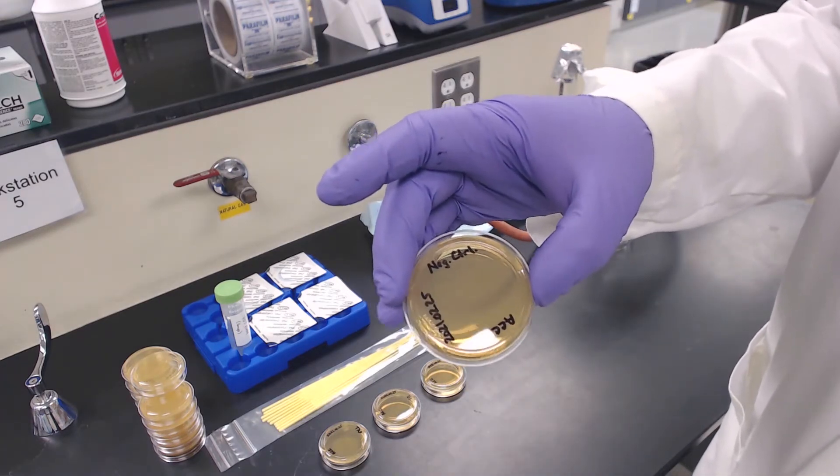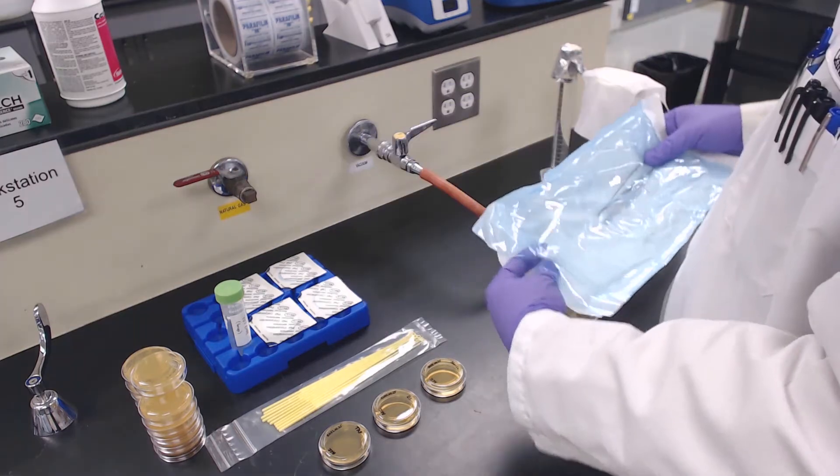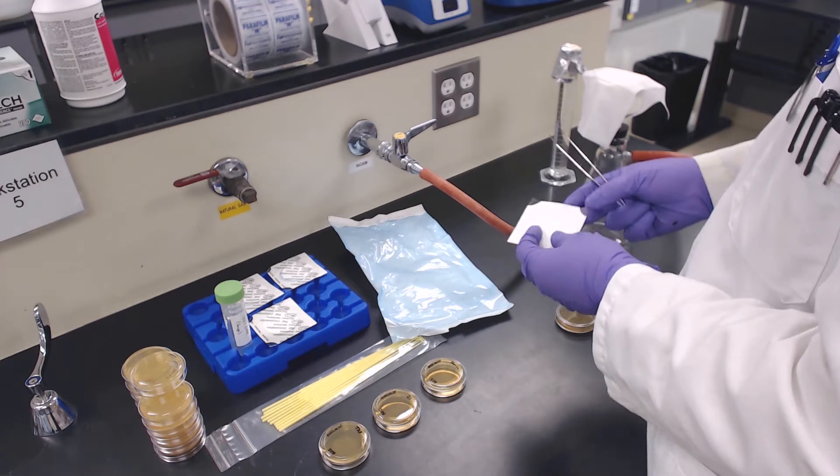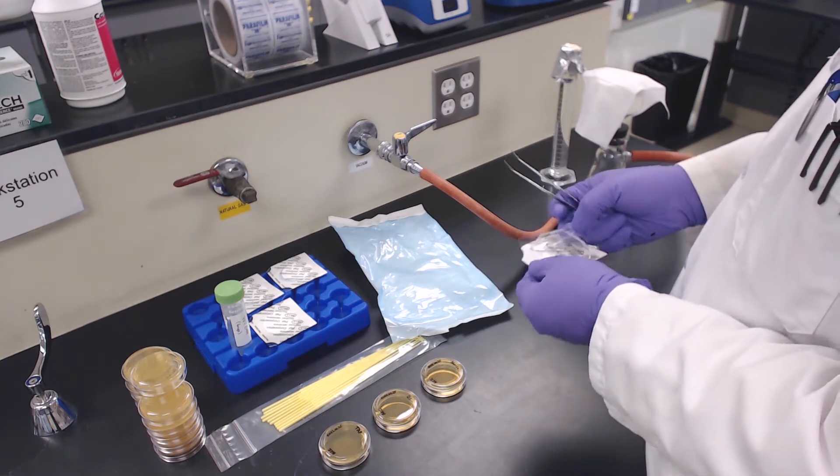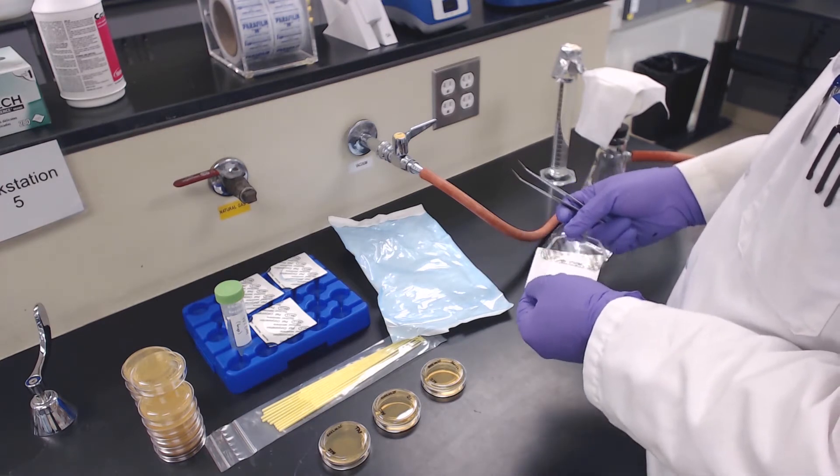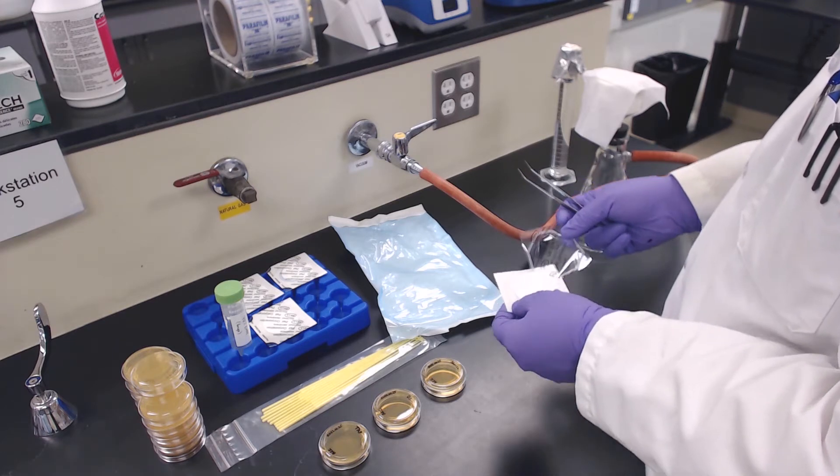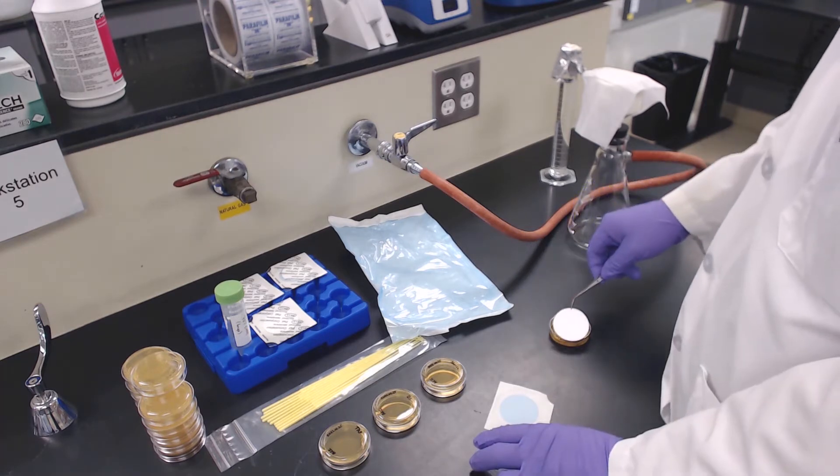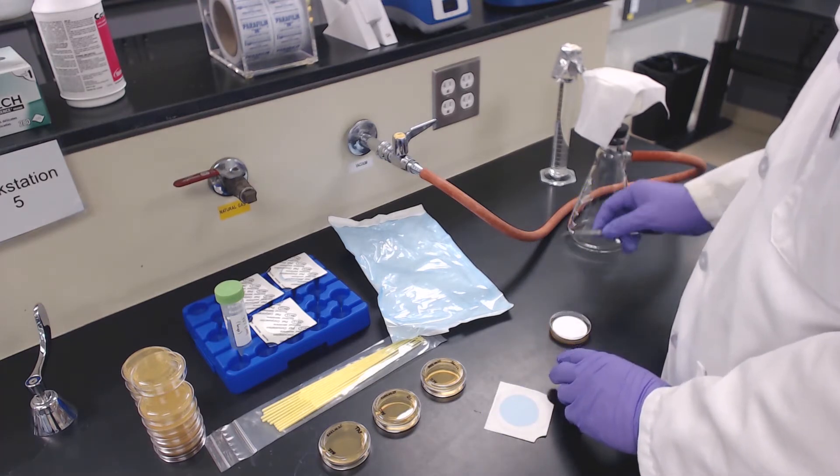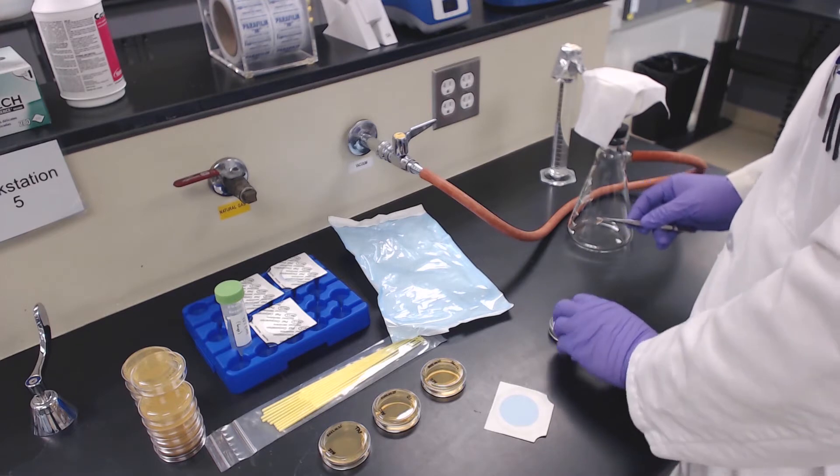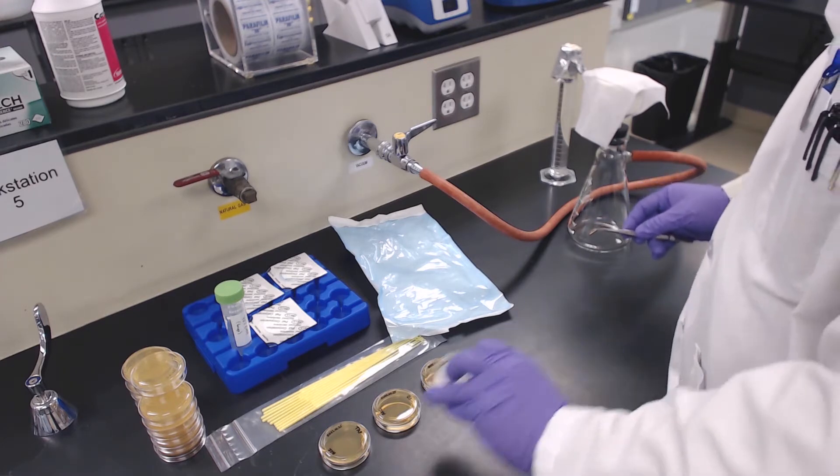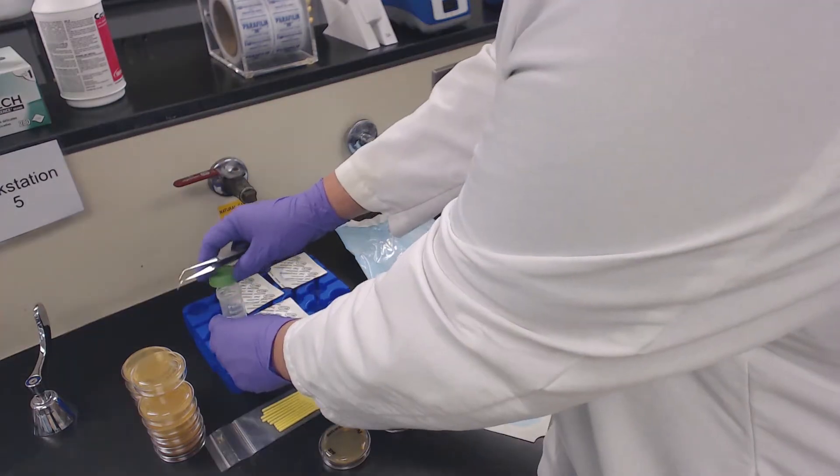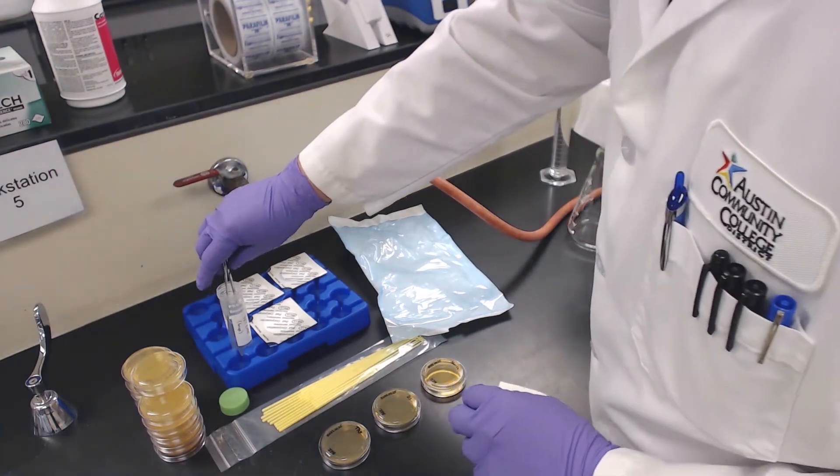Before filtering the water samples, prepare a negative control plate. Remove a gridded filter paper from the packaging. Using sterile forceps, place it directly on the negative control plate, grid side up. Set the plate aside so that you may process the other water samples. Place your forceps in the provided 70% ethanol to keep them sterile between use.